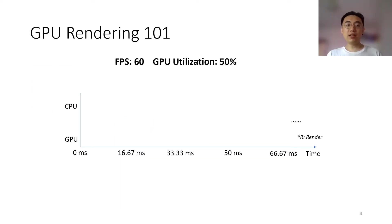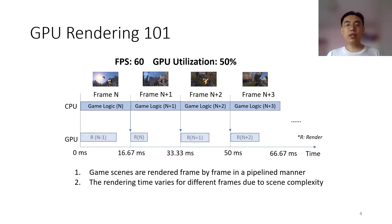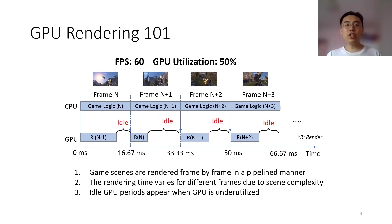To understand the situation of cloud gaming's low utilization, let's briefly learn how GPU renders frames for games. First, game scenes are rendered frame by frame in a pipeline manner. The CPU processes the game logic and prepares the rendering commands to be submitted to the GPU, and the GPU does the rendering computation. Second, due to different scene complexity, the rendering time varies greatly for different frames. Third, when the GPU is underutilized, there will be multiple fragmented idle GPU time periods.